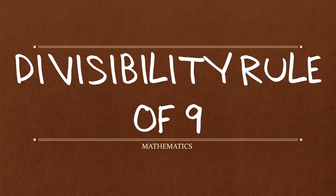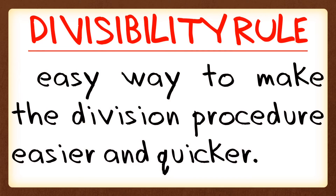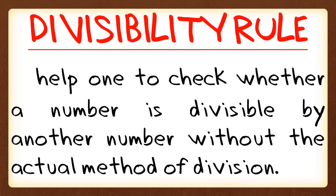In this video, we're going to learn about the divisibility rule of 9. A divisibility rule is an easy way to make the division procedure easier and quicker. It helps one to check whether a number is divisible by another number without the actual method of division.